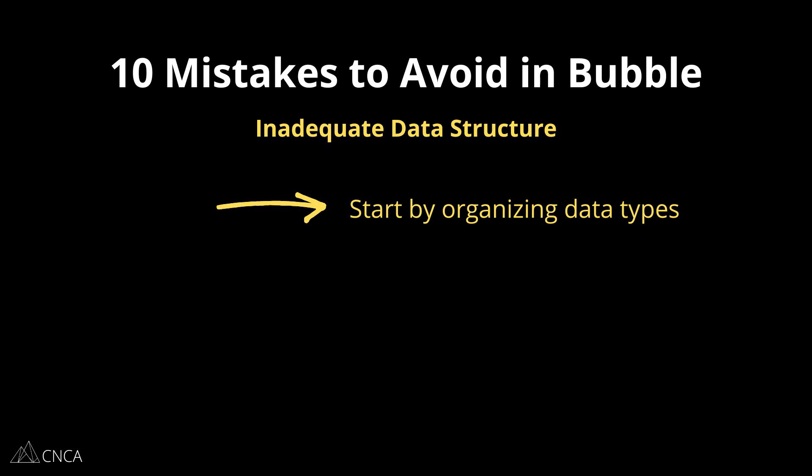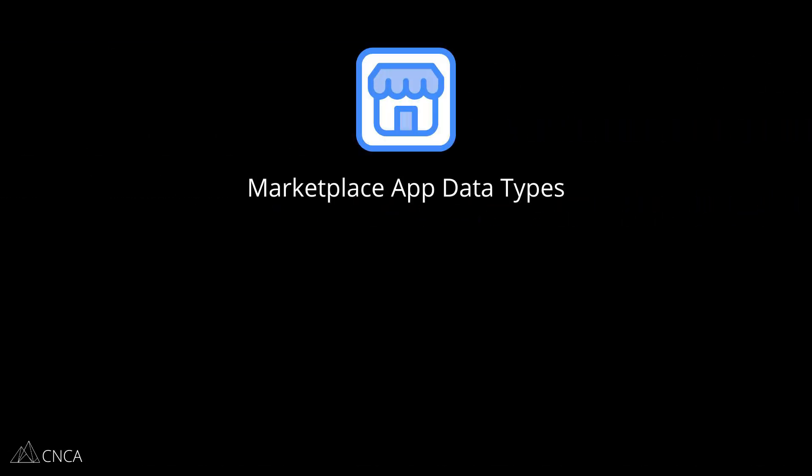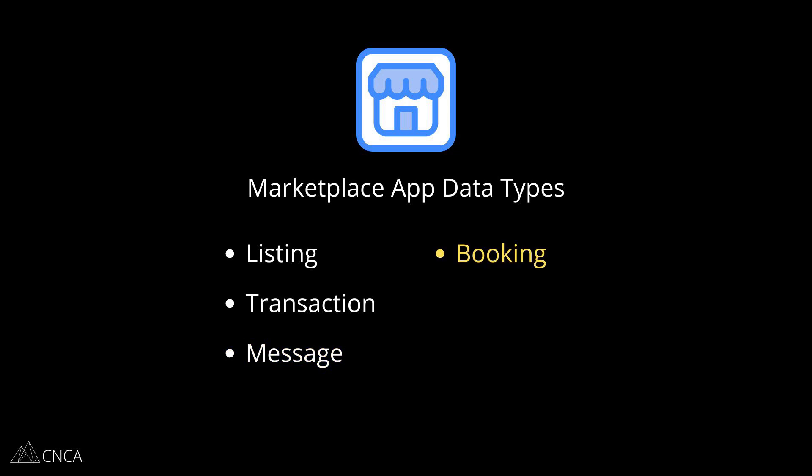Data types are your tables and are the first level of database organization. Make sure you're separating your data into enough tables to keep things easy to manage. A good rule of thumb is to think about all the important nouns in your app. For example, if you're building a marketplace, some important nouns would include listing, transaction, message, booking, offer, and photo.